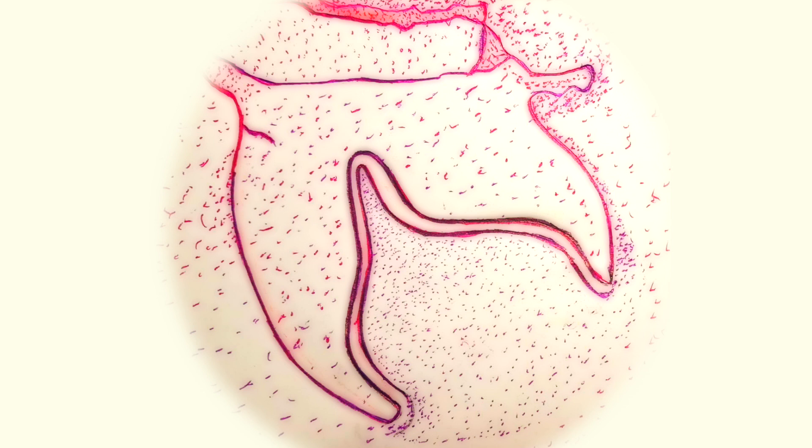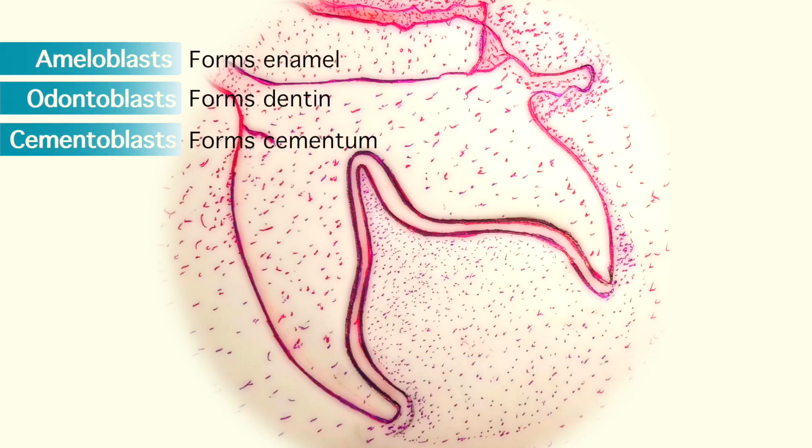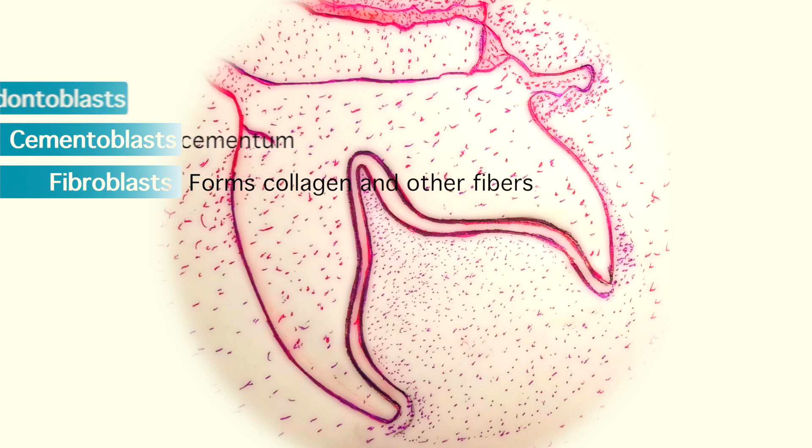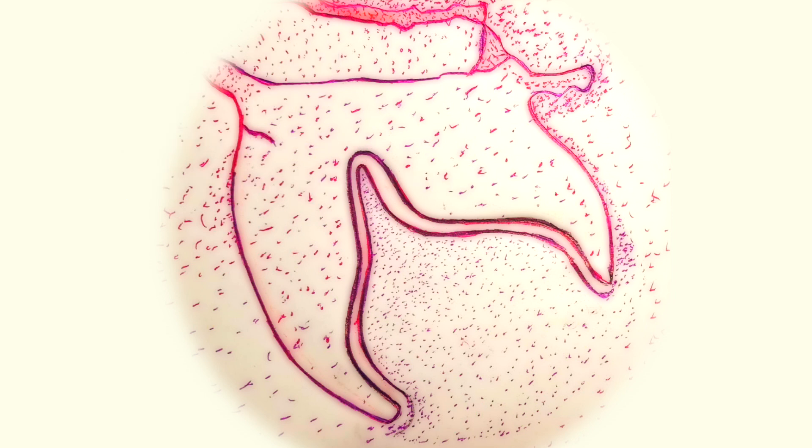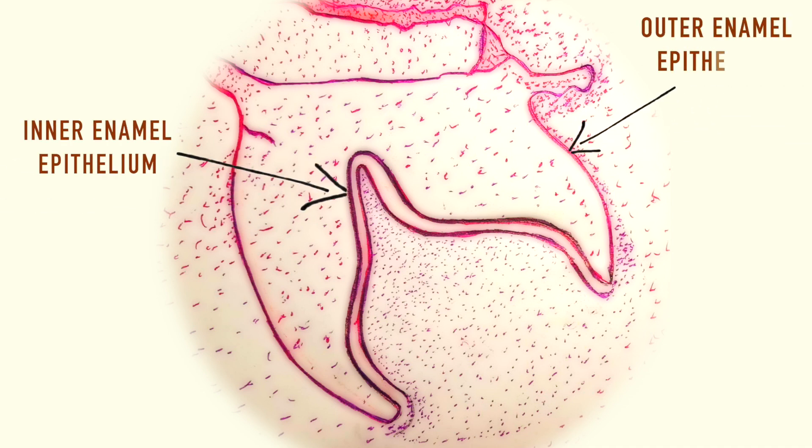Tooth development continues in the early bell stage where cells differentiate into ameloblasts, odontoblasts, cementoblasts, and fibroblasts. The undersurface of the enamel organ has deepened giving the organ its bell shape. In this stage outer epithelial cells lining the enamel organ can be distinguished as the inner enamel epithelium and the outer enamel epithelium.